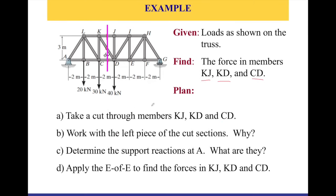First, we need to take a cut through members KG, KD, and CD — shown by the pink line — so that it exposes the internal forces we would like to find. We then work on the left piece of the cut section. The reason we select the left piece is related to finding the support reaction at A, so these two steps are connected.